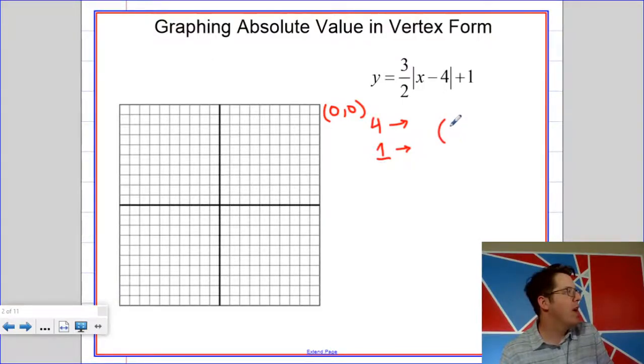we're going to have a vertex of four, one. I suppose it would probably be helpful if I said one unit up as opposed to one unit right. So four units to the right, one unit up.